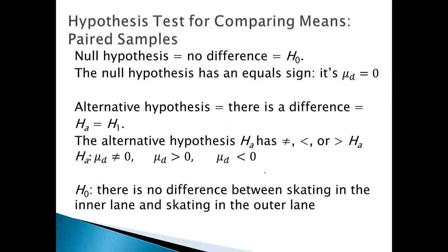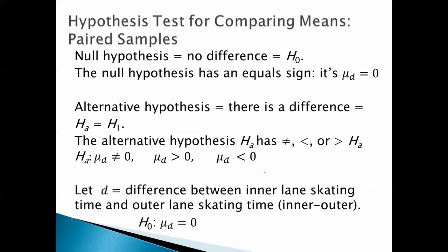The null hypothesis is that there is no difference between skating in the inner lane and skating in the outer lane. So the way we can represent that mathematically is let d equal the difference between inner lane skating and outer lane skating time, inner minus outer, while the null hypothesis is that mu sub d equals zero.